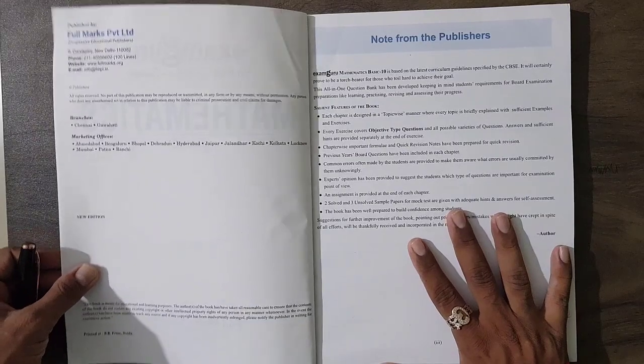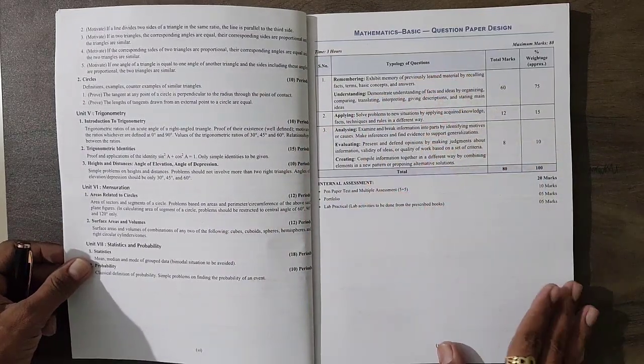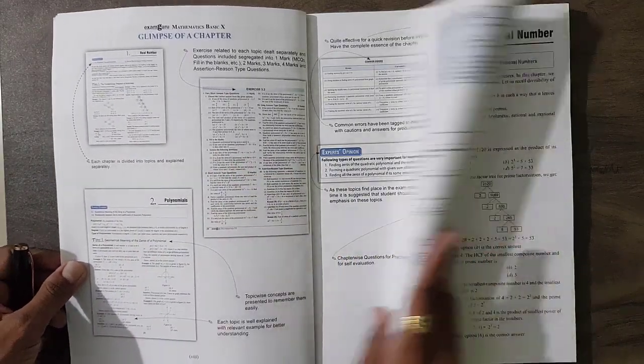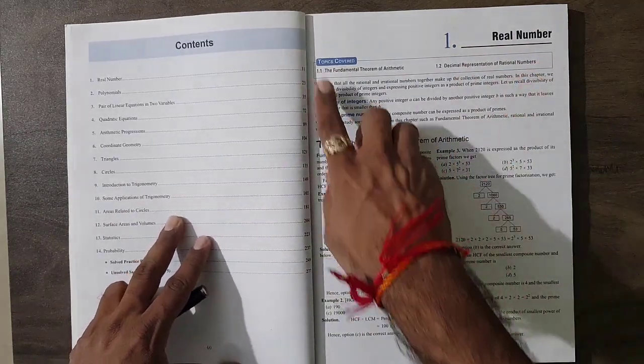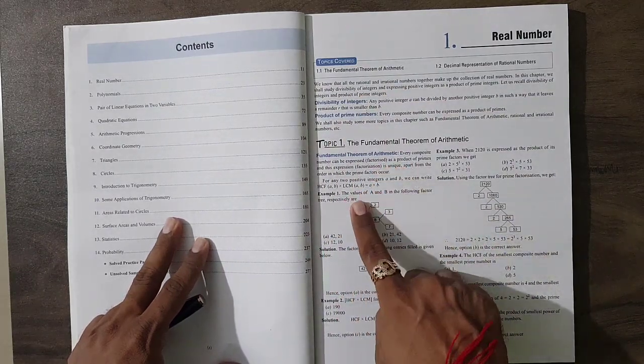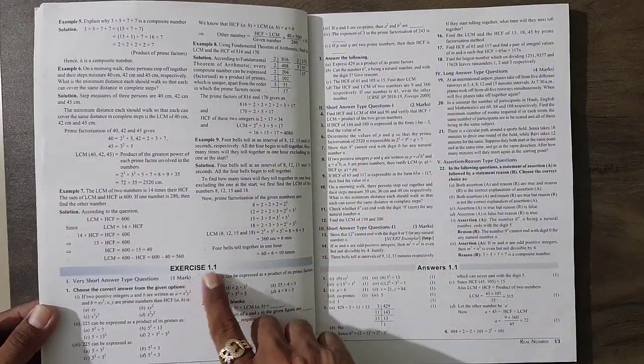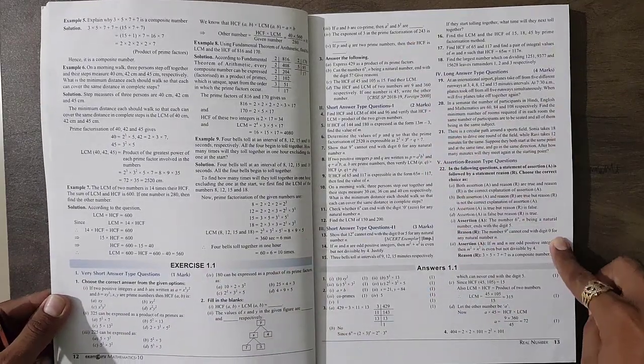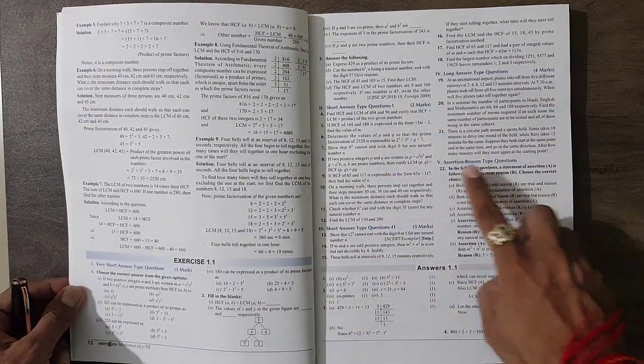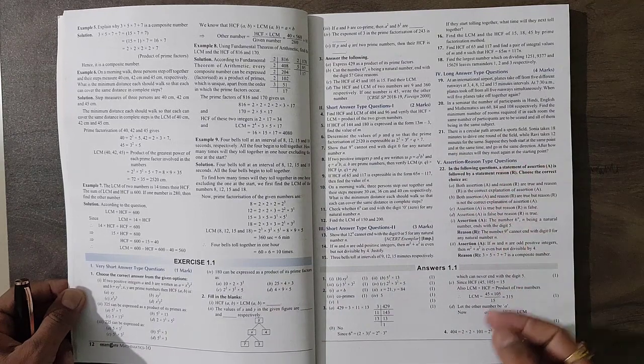You can see syllabus, question paper design, and a glimpse of chapters. Chapter number one is real numbers with topics covered. Here two topics are given that is covered and examples are given to you - examples one through nine. Then one exercise, Exercise 1.1, you can see 22 questions are there. In those questions: MCQs, fill in the blanks, short type questions, long type, and assertion-reason type questions are also given.